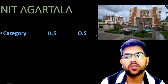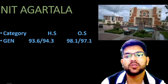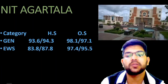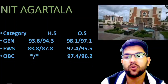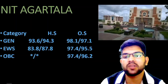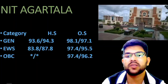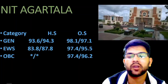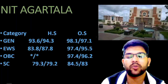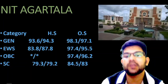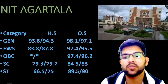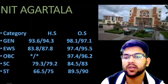For NIT Agartala, General candidates need 93.6 for home state and 98.1 for other state. EWS: 83.8 and 97.4 percentile. OBC: 97.4 — wherever you see a star mark, that means there is no special reservation for that category in that particular NIT for the CSE branch. For SC: 79.3 and 84.5 for home state and other state male candidates, female after the slash. For ST: 66.5 and 89.5 percentile.